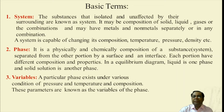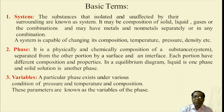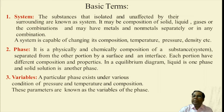A system is capable of changing its composition, temperature, pressure, density, etc. Next, what is a phase? A phase is a physically and chemically distinct portion of a substance or system, separated from other portions by a surface and an interface. Each portion has different composition and properties. In an equilibrium diagram, liquid is one phase and solid solution is another phase.